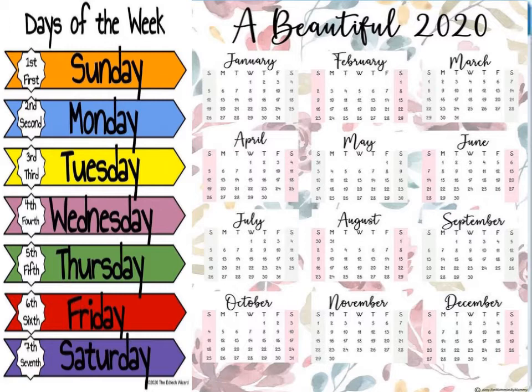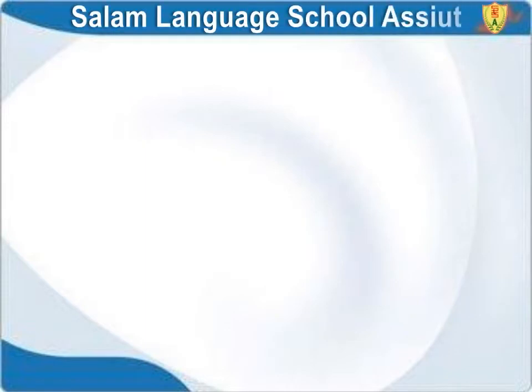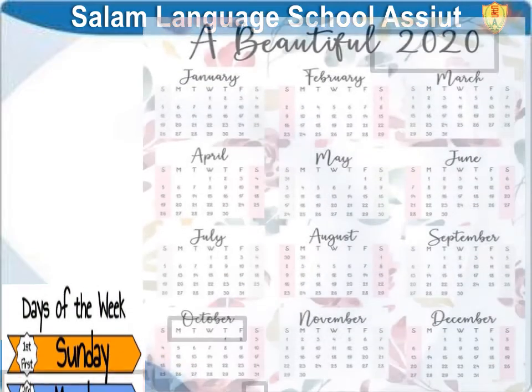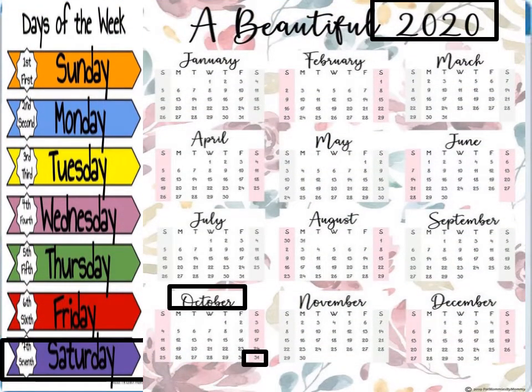We have 7 days in a week, and also we have 12 months in a year. Today is Saturday, 31st of October 2020.